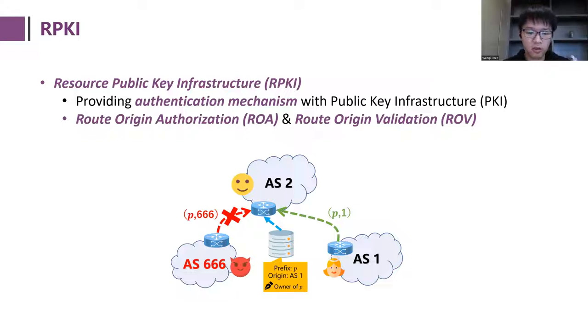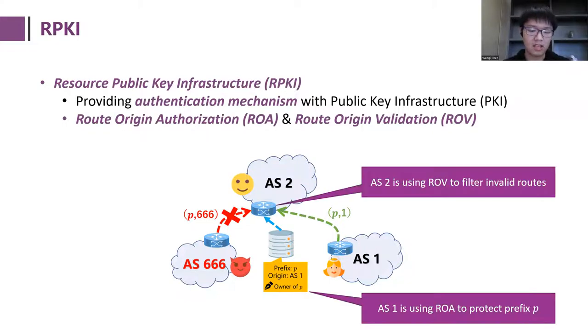The first step to authorize an AS to originate a prefix is called Route Origin Authorization, and the second step to check the validity of the received routes is called Route Origin Validation. For example, in the following figure, we can say AS1 is using ROA to protect its prefix P, and AS2 is using ROV to drop invalid routes.